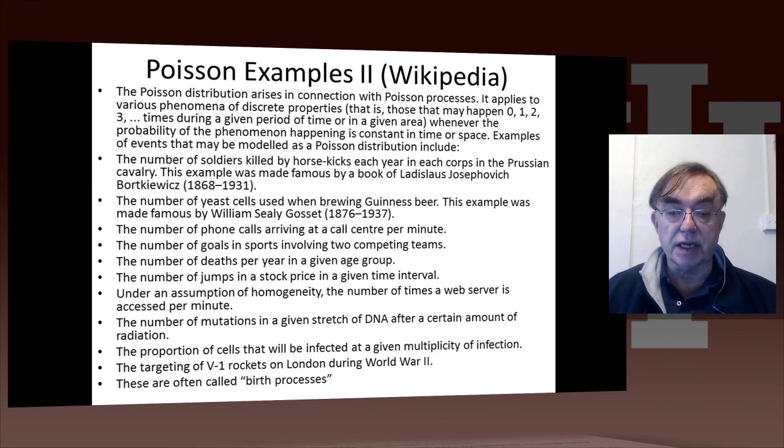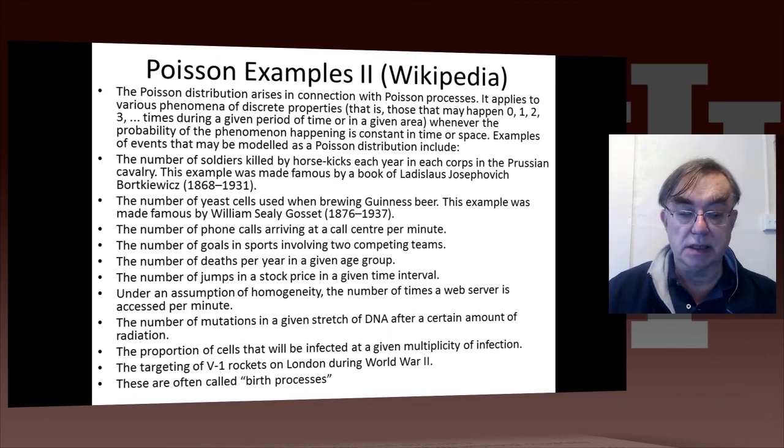Deaths per year in a given age group. So the stock market has Poisson distributions. Number of times a service is accessed per minute and so on. So there are many examples of Poisson.